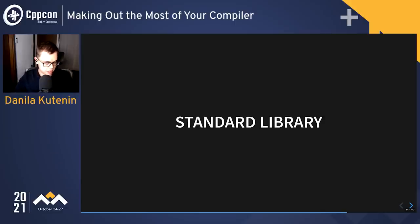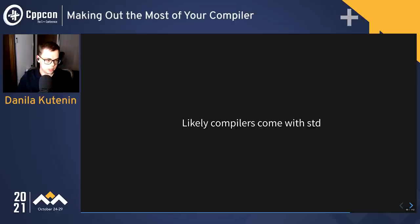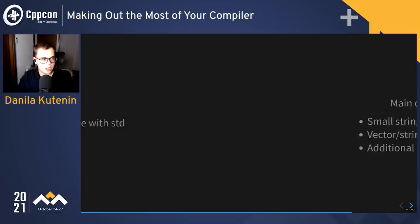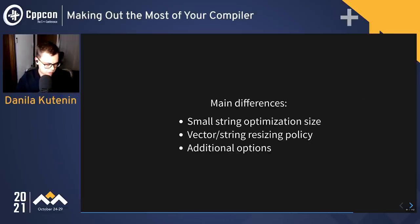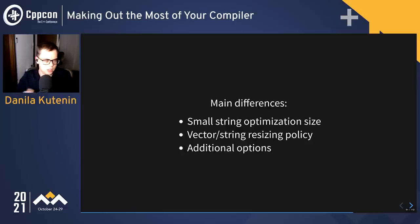Standard library: compilers typically come with one. GCC has libstdc++, Clang has libc++, and MSVC has its own. The main performance differences are in things used a lot: vector and string. For example, small string optimization size differs by library — in libc++ it's 22, in libstdc++ it's 16, in Facebook's library it's 23, in MSVC it's also around 16. Some libraries use copy-on-write strings. Vector and string resizing policy also matters, as do some unordered containers and functions like std::sort.